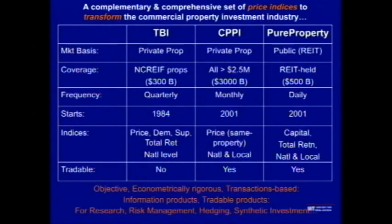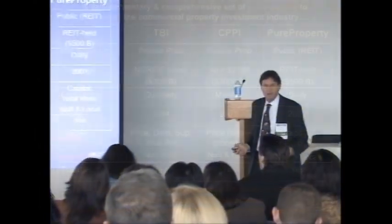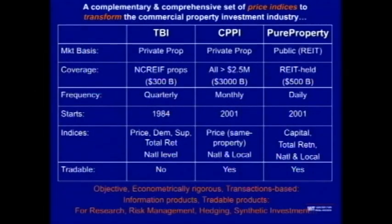I won't get us too bogged down in all the details, but the point is that no two of these indexes exactly duplicate the other. Each one brings something unique, important, and different to the picture. For example, the NACREF-based TBI has the longest history, but it's based on the smallest population of properties — roughly $300 billion of properties owned by the NACREF data-contributing members. It's a very interesting and sort of benchmark group of properties, but it's a small and rather specialized group. That index includes not just a price index, but it tracks the demand side of the market, the supply side of the market. It's a total return index, but it's only at the national level, and it wouldn't be a good index to actually trade if you were trying to make derivatives.